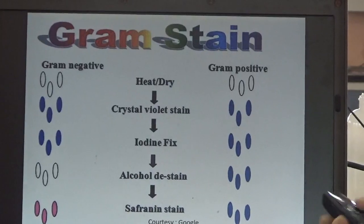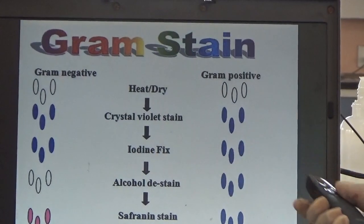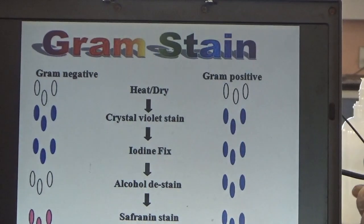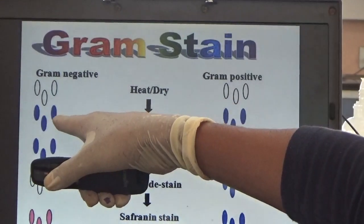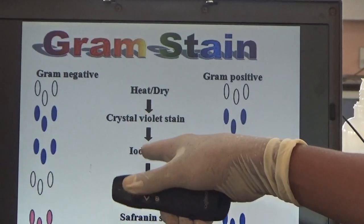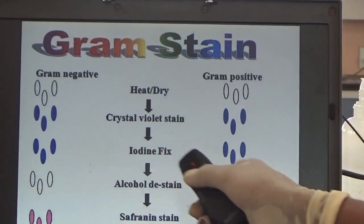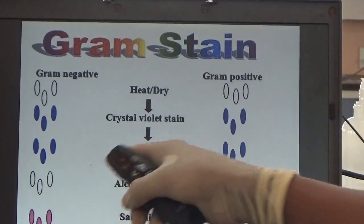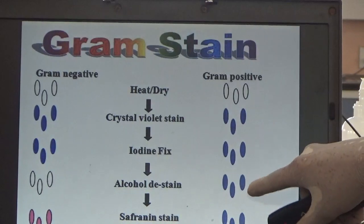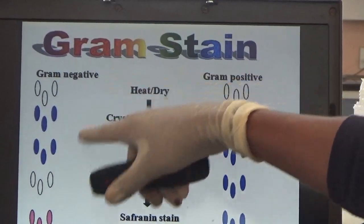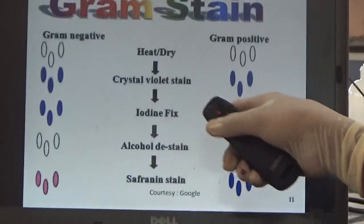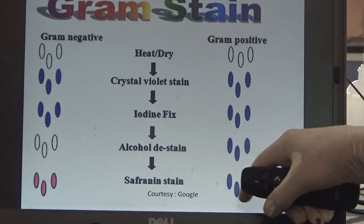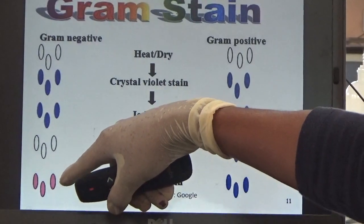Here you can see the process we discussed. On a normal slide, when crystal violet stain is added, you see a violet color. After 2 minutes, when Gram iodine is added, you still see violet color — no color change. But when alcohol is added as the decolorizer: if the slide is Gram positive, you still see violet color; if Gram negative, you see colorless. Then after adding safranin counterstain: Gram positive remains violet, but Gram negative becomes pink or purple.